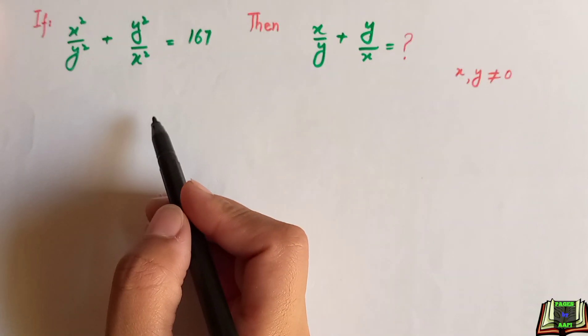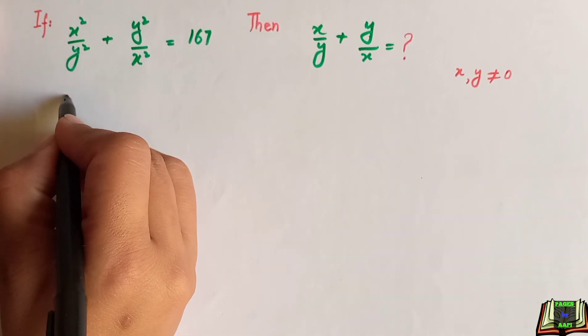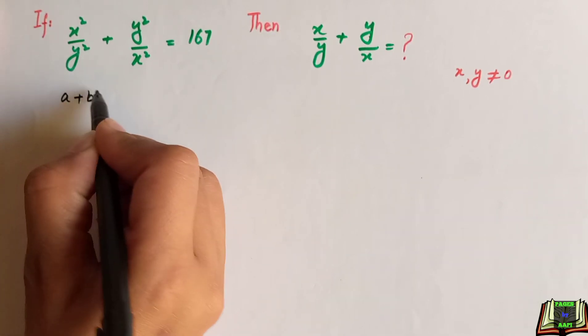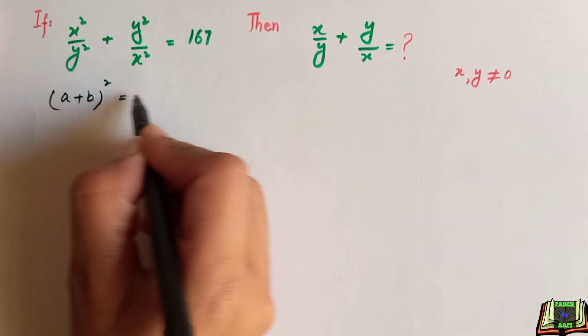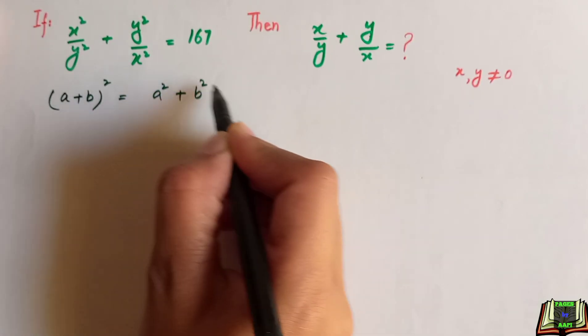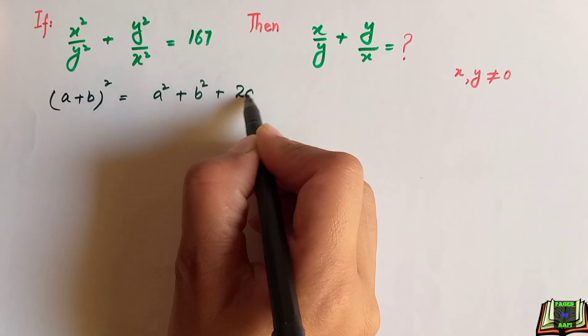So look at its solution. We are going to use the very well known algebraic expression a plus b whole square is equal to a square plus b square plus 2ab.